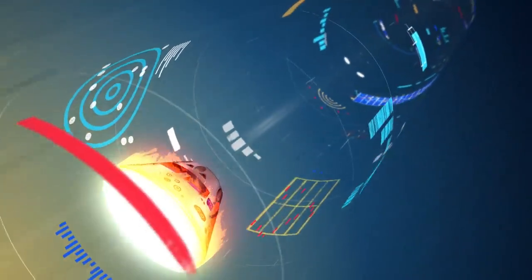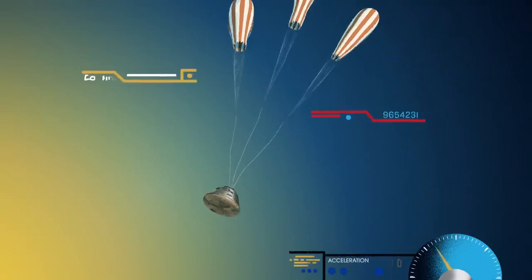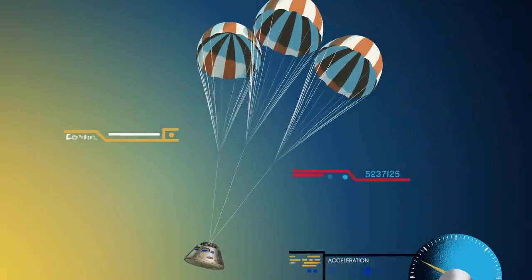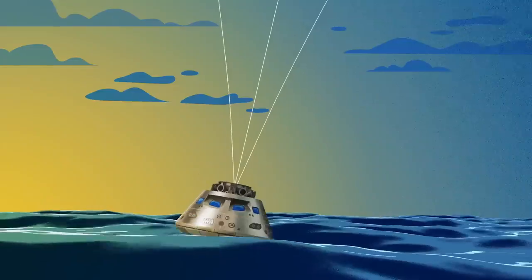With the Orion now at just 300 miles per hour, a series of parachutes uniquely tested and produced for this moment deploy, decelerating the craft to just 20 miles per hour for splashdown.